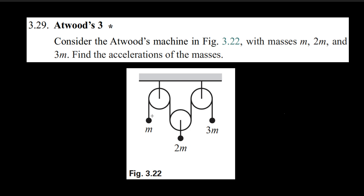In this problem, we're going to try to find the acceleration of these three masses. The way we do that is to first consider the force acting on each one of these masses. I'm going to let downwards be positive, so a positive force means it's pulling downwards. I'm going to say this mass has an acceleration of a1, this one has a2, and this one has a3. Our task is to find a1, a2, and a3.